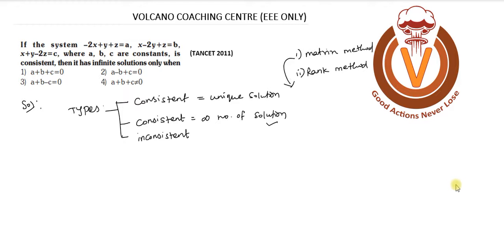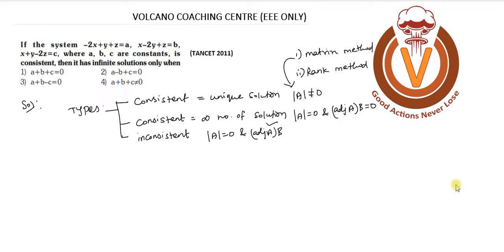In the matrix method, for the first case, det(A) is not equal to zero. For the second case, det(A) equals zero and adjoint(A) times B equals zero. For the third case, det(A) equals zero and adjoint(A) times B is not equal to zero, which means the system is inconsistent.